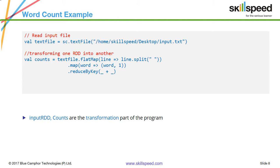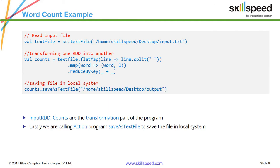reduceByKey is a very interesting action. What it actually does is keep your key and apply whatever transformation you want on all the values belonging to that key. Here I'm typing reduceByKey(_ + _), which means x, y => x + y — I want to add each value together. So for the same key it applies the add operation, summing up all the values. Finally, I save the output using saveAsTextFile, applying it on the counts RDD with a specified location. This is the very simple program for counting the number of words.